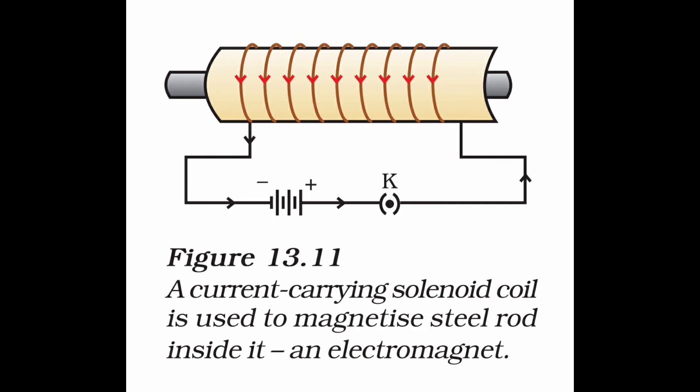The magnetic field is uniform inside the solenoid. A strong magnetic field produced inside a solenoid can be used to magnetize a piece of magnetic material like soft iron when placed inside the coil. The magnet so formed is known as an electromagnet.